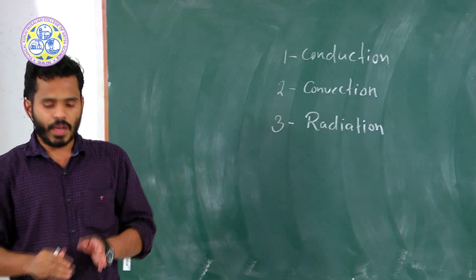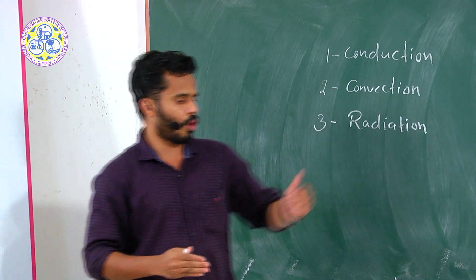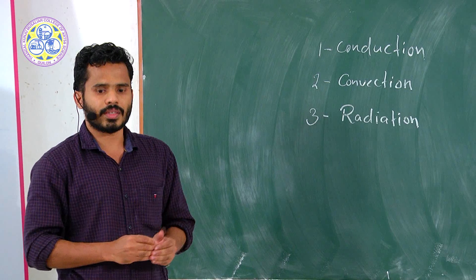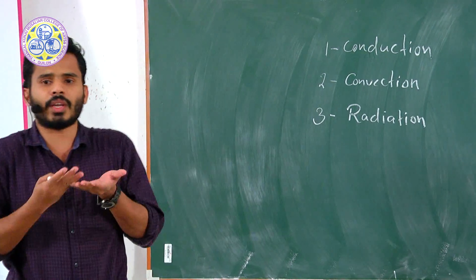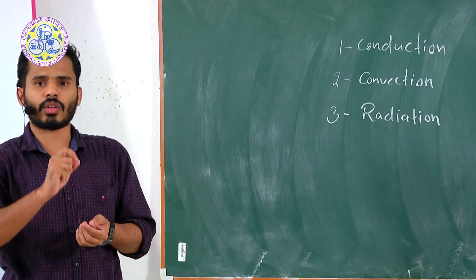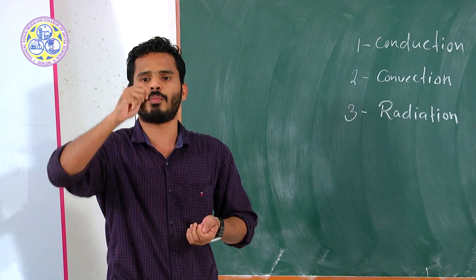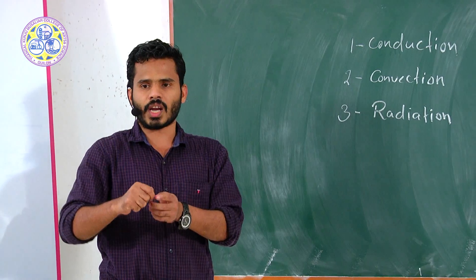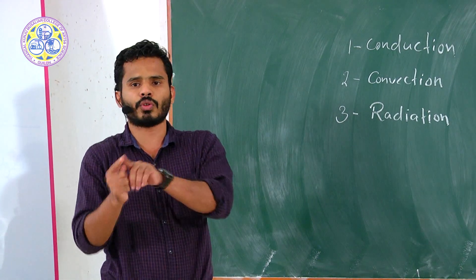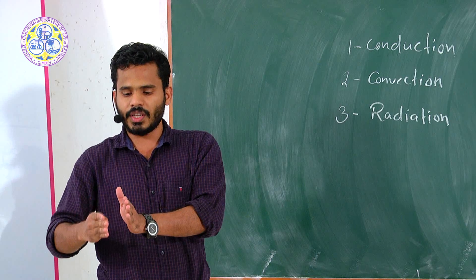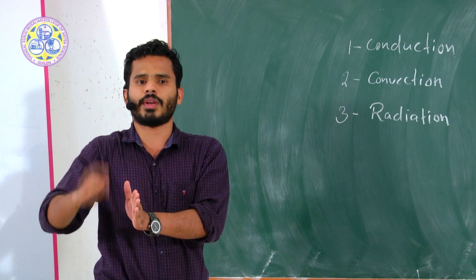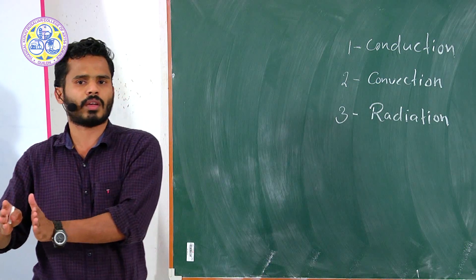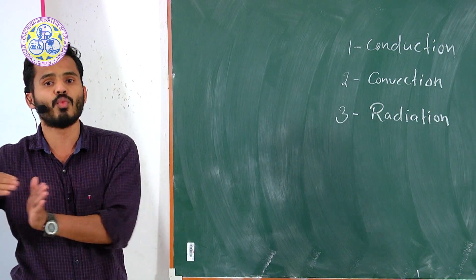In the conduction process, heat transfers from one point to another without the actual movement of the particle. When heated, the particle or molecule starts to vibrate about its mean position, gaining more kinetic energy. This energy transfers from the nearest particle to the next particle. The nearest particle also starts to vibrate, and energy transfers from particle to particle. In that case there is no particle movement.